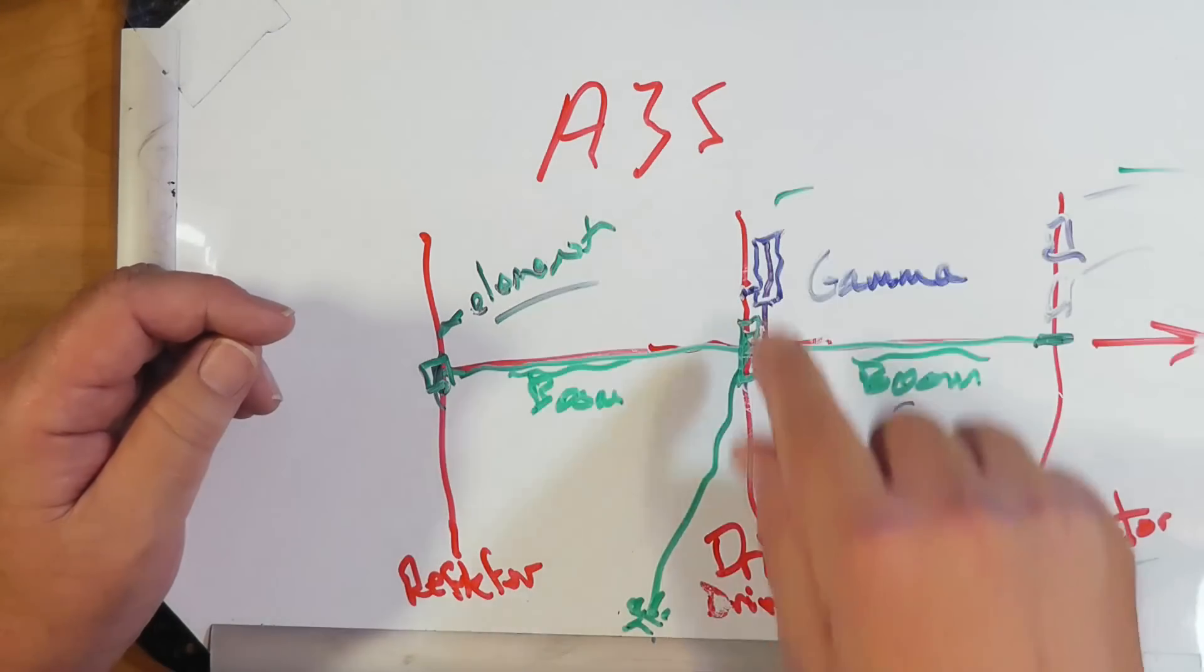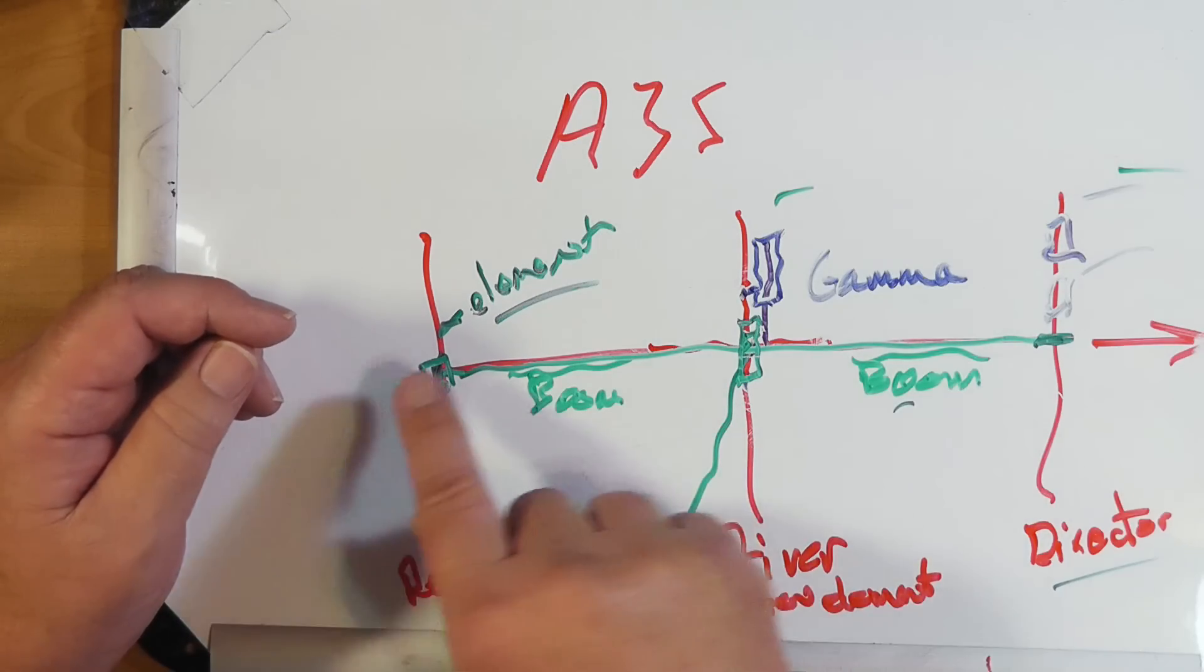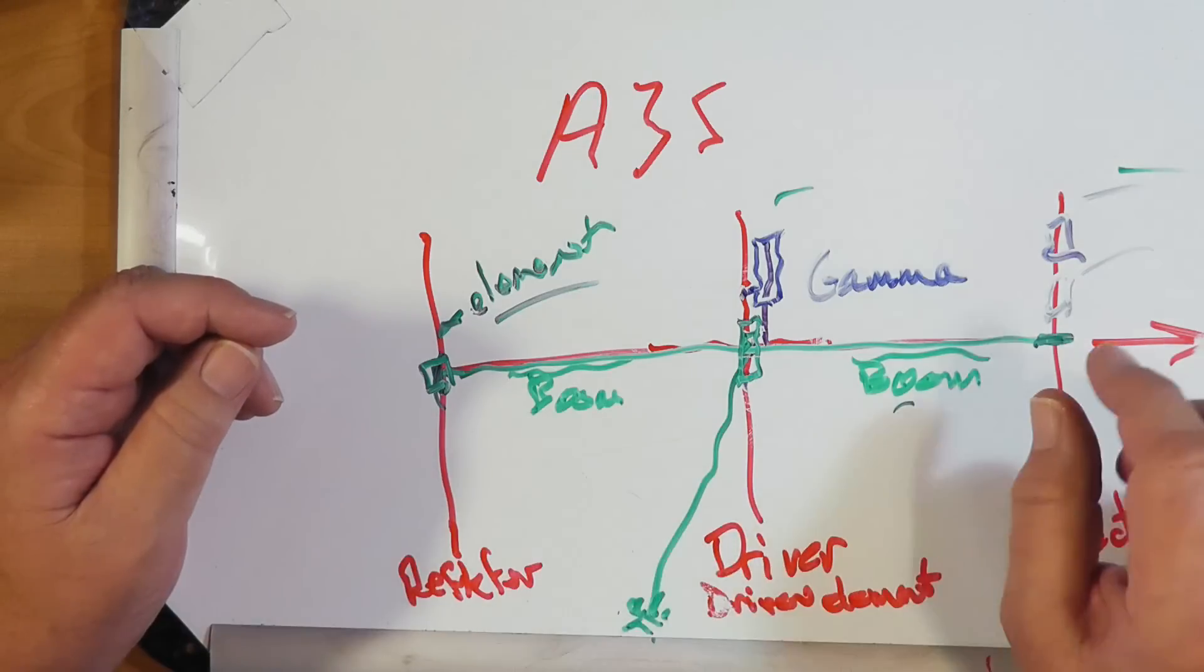I have a four element beam from, I think it's Diamond antenna. It could be Arrow, because they both make similar products. It's a two meter beam. It's four elements, uniformly spaced. They are solid aluminum rods that come through an aluminum mast. And then it has a gamma match on it. It works like a charm. Works great.